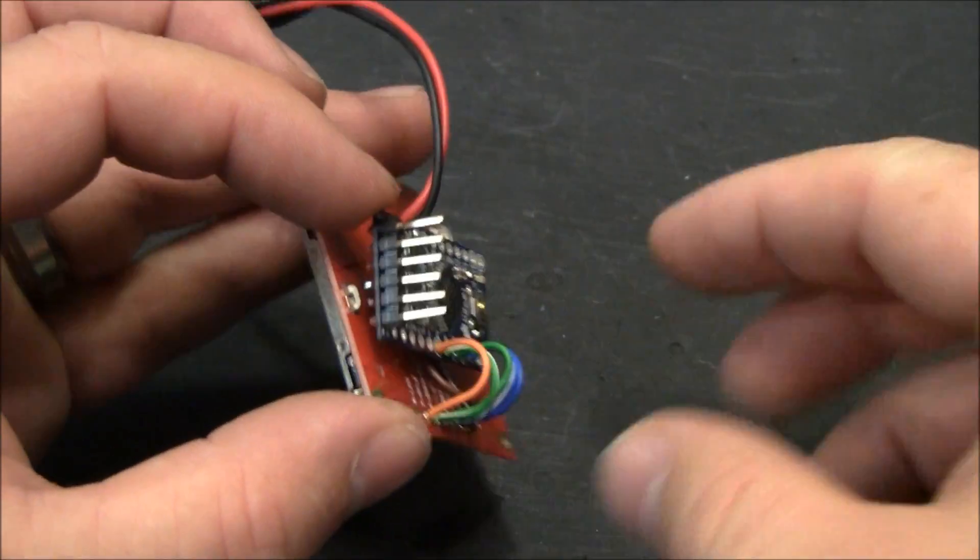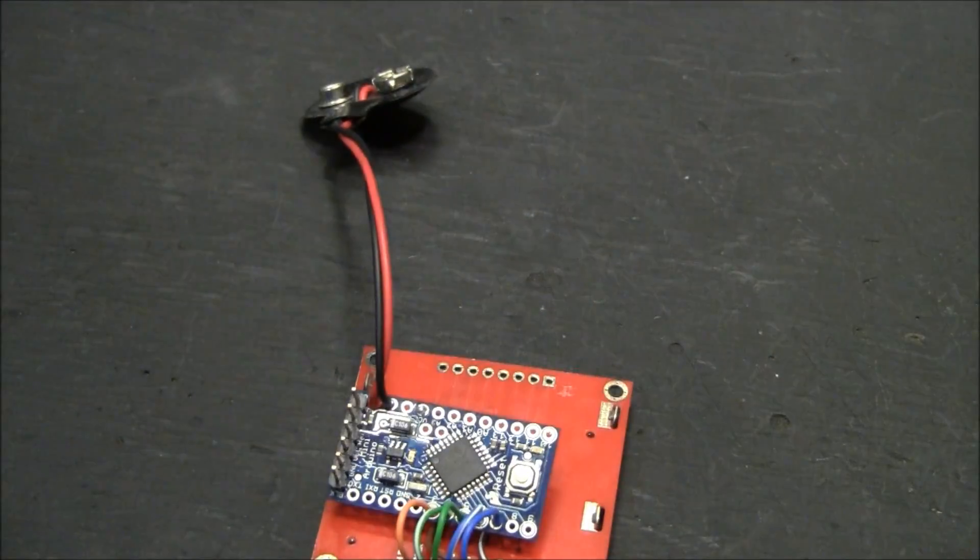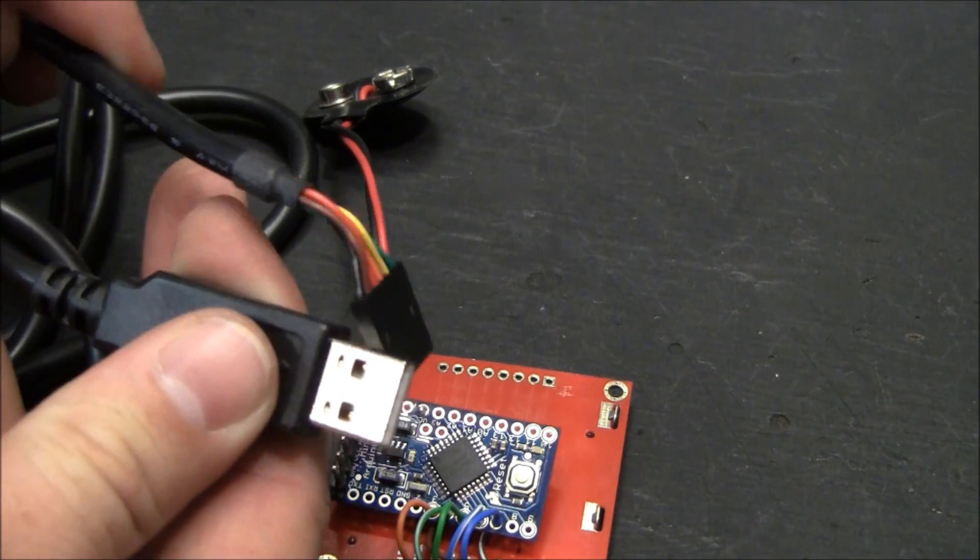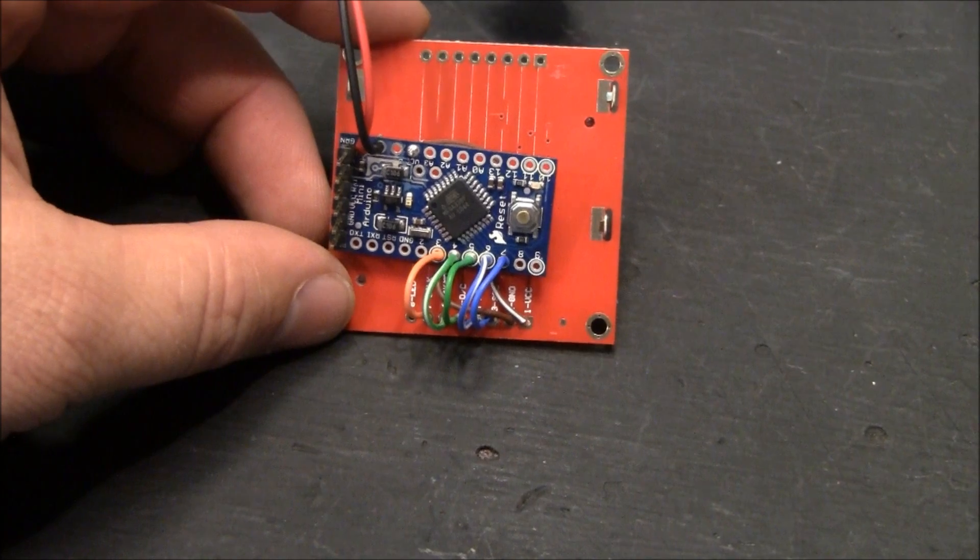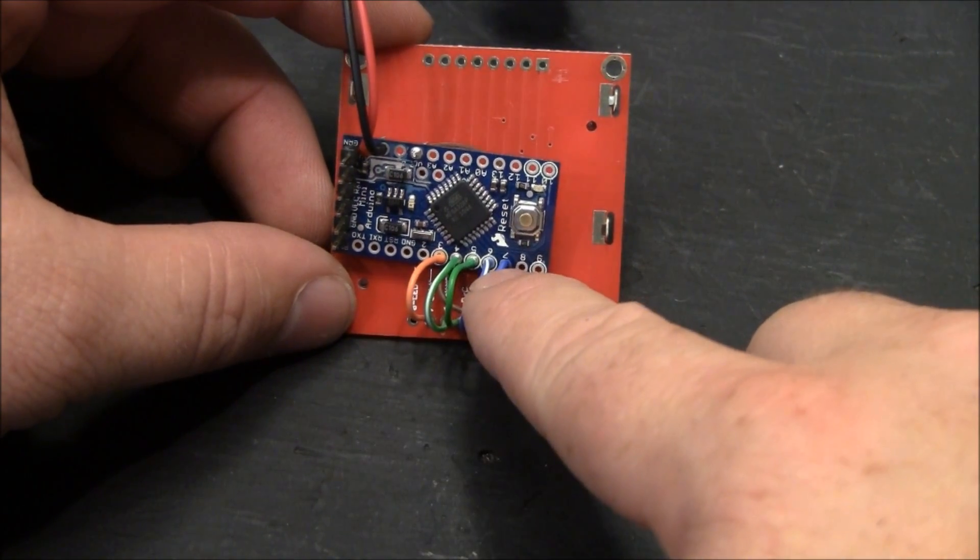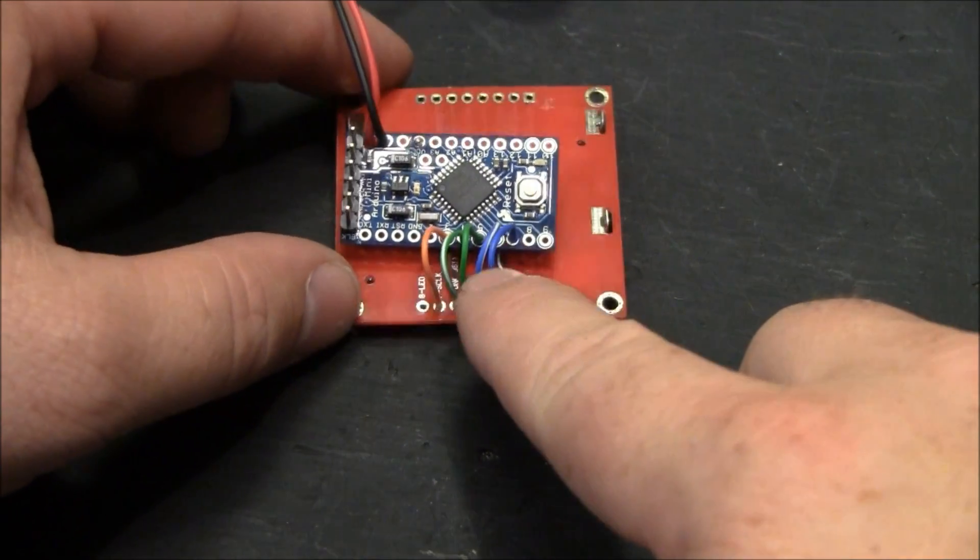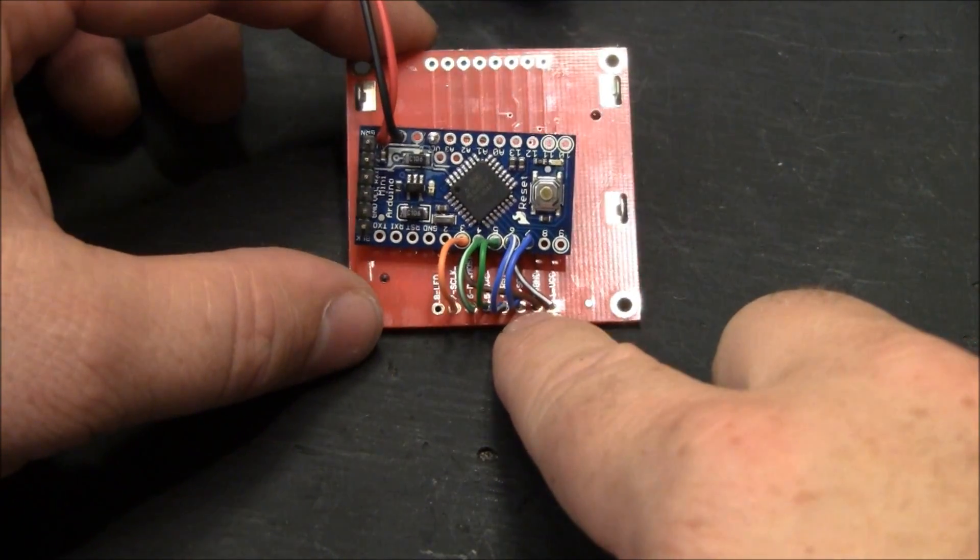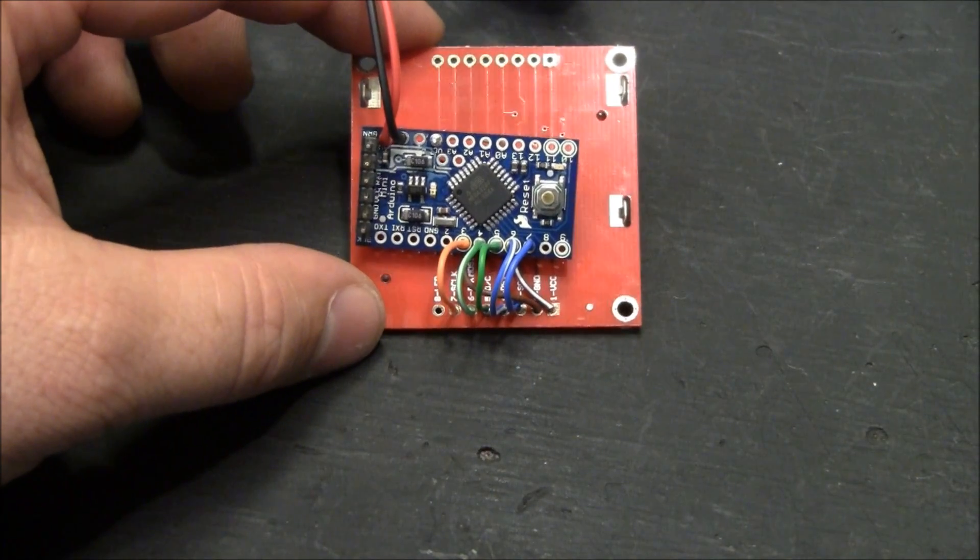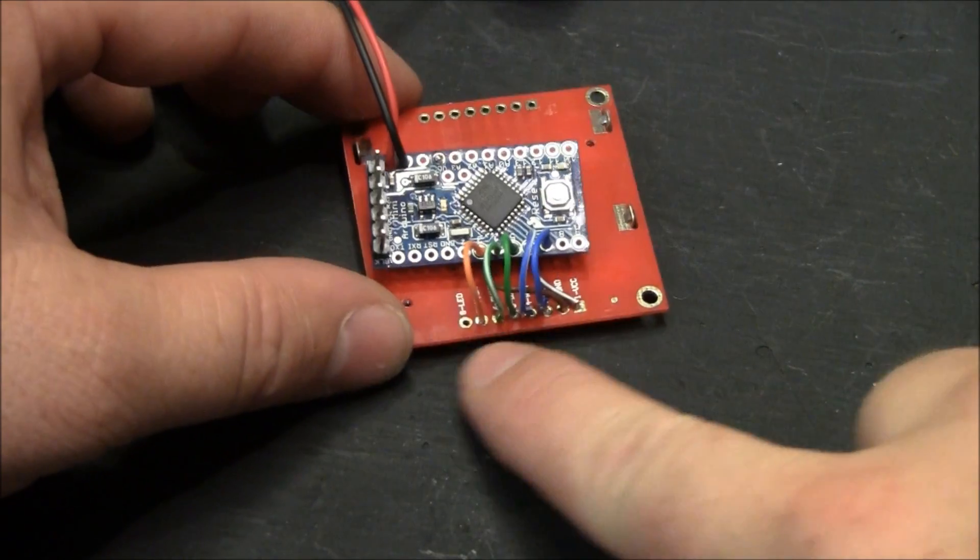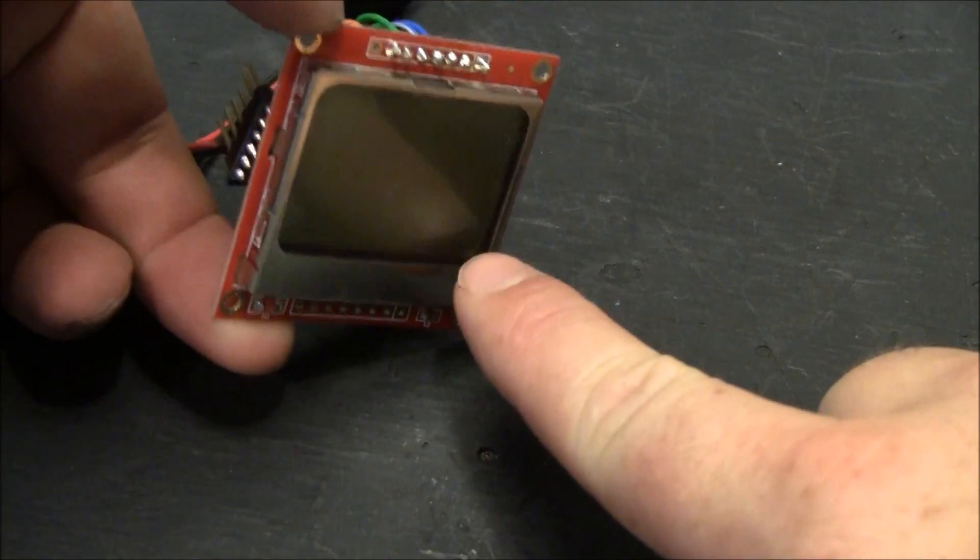I went ahead and soldered header pins on here so I can use my FTDI programming cable. I'm just coming off of pins 3 through 7, the discrete pins. I'm coming over here to these inputs on those 5 lines going into the LCD screen. These two are power and there's one if I wanted the LCD backlight.